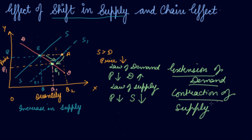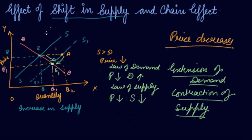Both extension of demand and contraction of supply happen when your price decreases — this is your chain effect when there is an increase in supply. Similarly, if supply decreases, your price increases. When price increases, it affects the supplier to sell more, so there will be a chain effect: supply will extend and demand will contract.